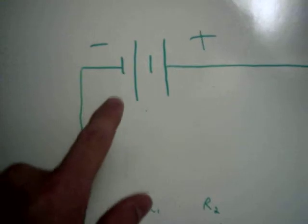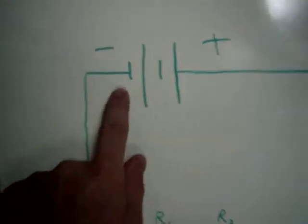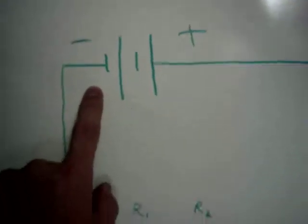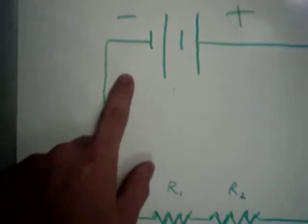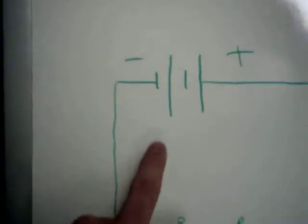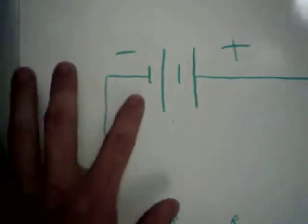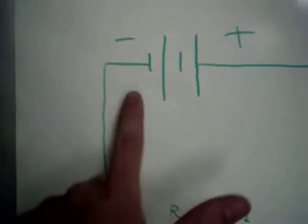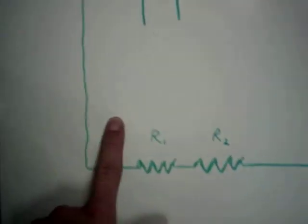But really what happens is at the negative terminal, voltage is zero. This is because there's no resistance, and voltage equals resistance times current, and if there's no resistance, then it doesn't matter what the current is, there's no voltage.